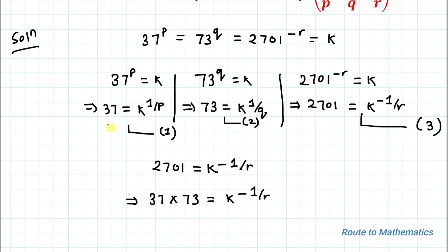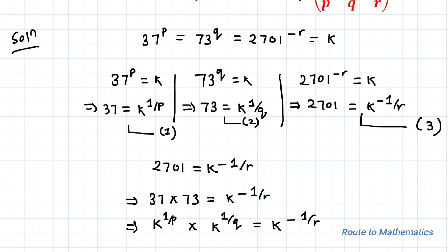From equation 1 we have 37 = k^(1/p), and from equation 2 we have 73 = k^(1/q). Substituting these values, we get k^(1/p) multiplied by k^(1/q) equals k^(−1/r).